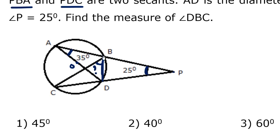You know that the angle subtended by a chord at any point in the major arc is equal. So if BD is subtending an angle of 35 degrees at point A, it will subtend the same angle of 35 degrees at point C as well. So we've got angle C as 35 degrees.